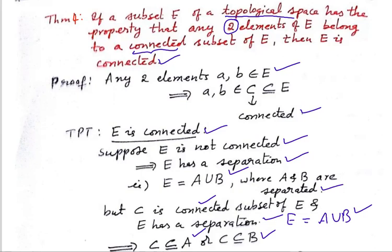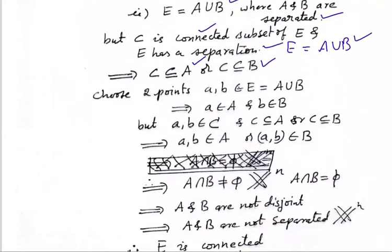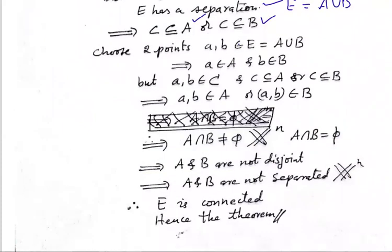We have to prove E is connected, and we have assumed E is not connected, so we need a contradiction. Take any two points in E. Let a and b belong to E, and E is nothing but A union B. The extreme case: point a belongs to A and point b belongs to B. But these points a and b are also in C — remember, C is a subset of E and the two points a, b will belong to C.